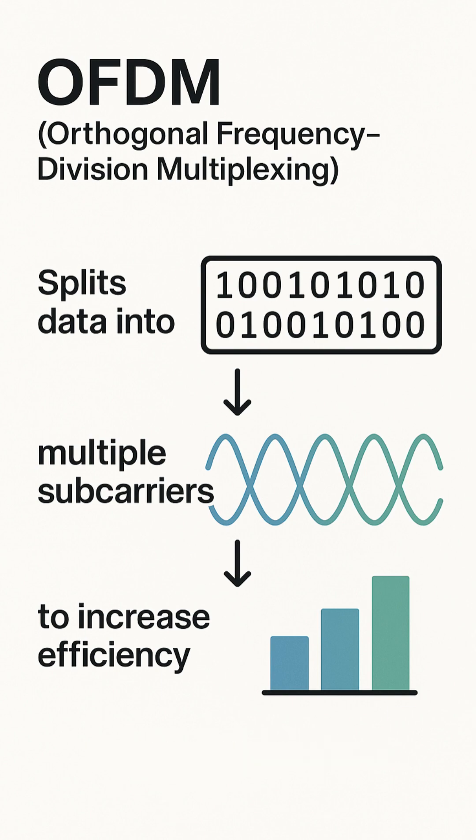Technical magic trick. The orthogonal part means sub-carriers overlap without interfering, like multiple radio stations sharing space without static.